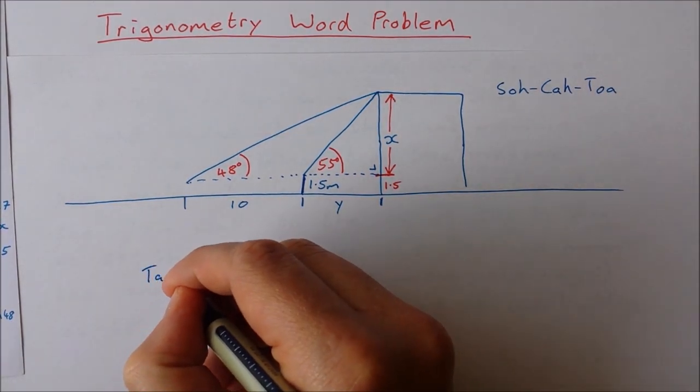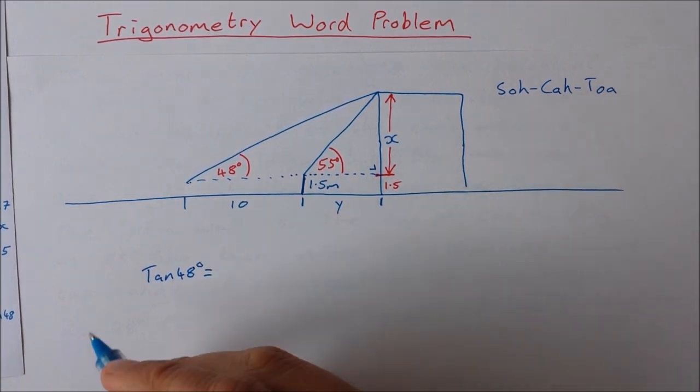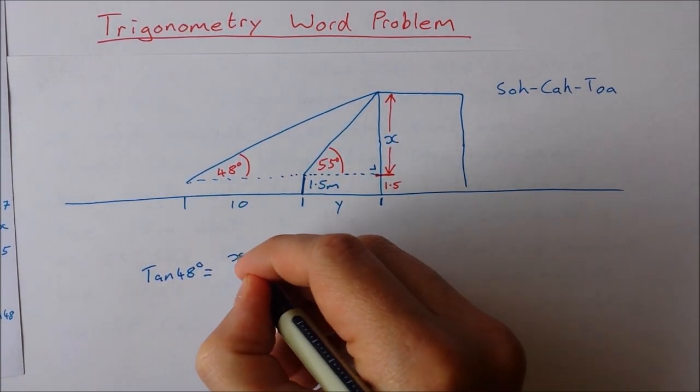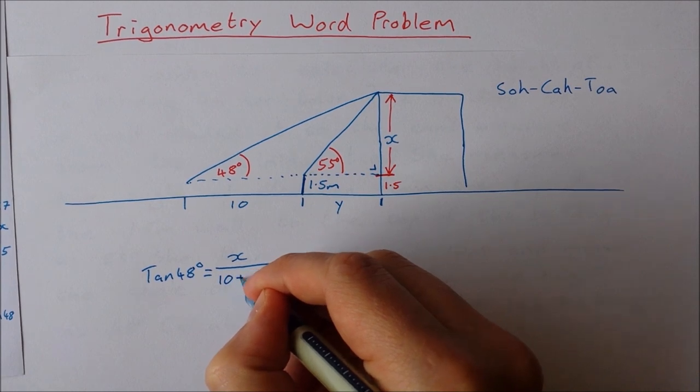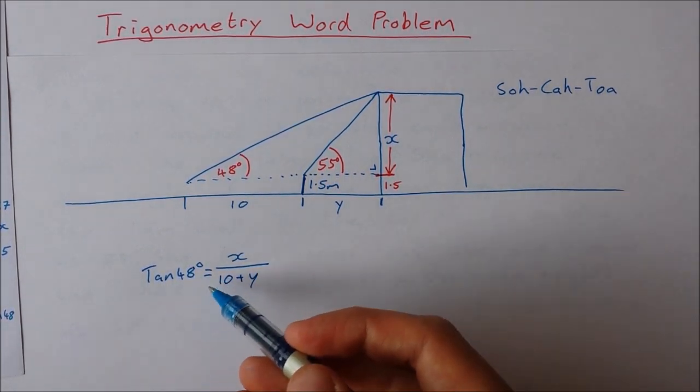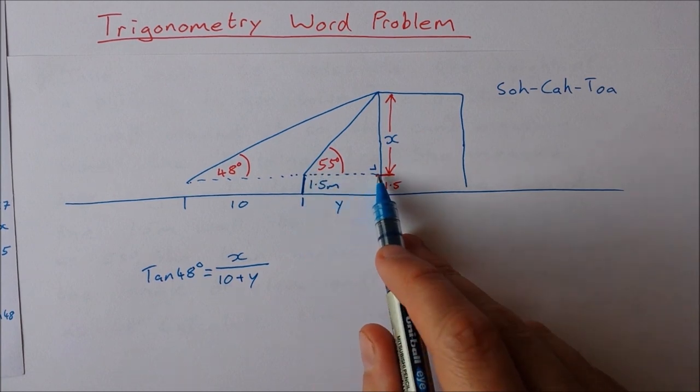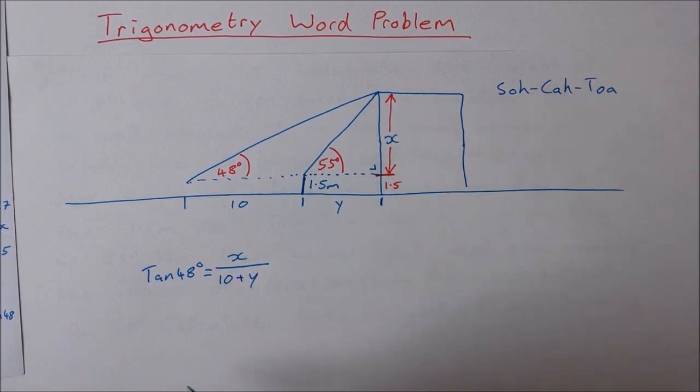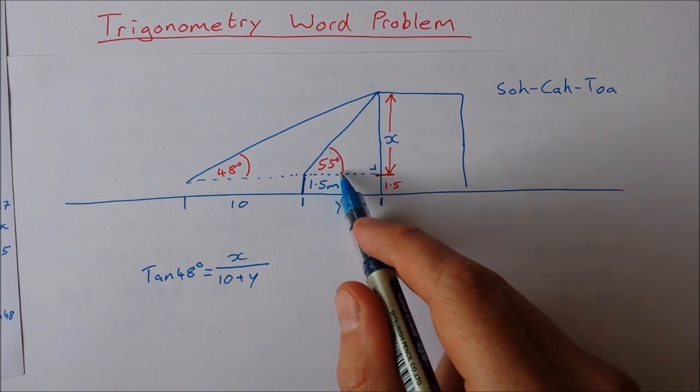Opposite adjacent means I'm using tan. So the tan of 48 degrees is equal to the opposite, which is x, over the adjacent, which is 10 plus y. Okay, I have a little equation here with two unknowns. Doesn't look like I can really do much with that at the moment.